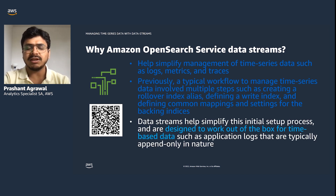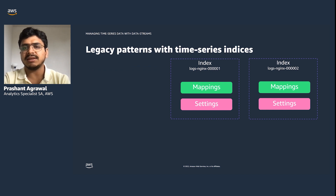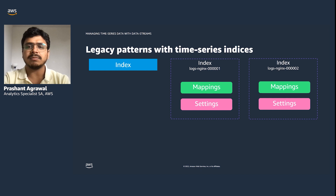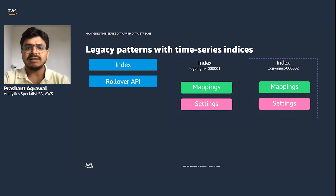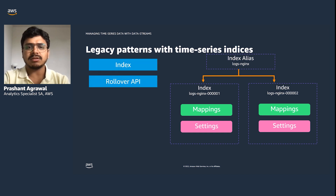Prior to data streams, users set up their indexes for time series data by first specifying index mapping and settings. As their data grew, they encountered scaling issues and started thinking about creating daily rotating indices based on dates, or using the rollover API to create an index for each day. At that point, users had more than one index to search, so they could either use a wildcard like log-nginx-* or create an alias.